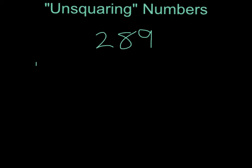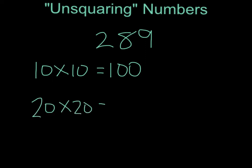Start out by multiplying 10 times 10. This equals 100. That is too small, so you know that your square number is going to be bigger than 10. Next, I am going to go up 10 more and multiply 20 times 20. 20 times 20 equals 400. This is too big, so I know that my square root is going to be smaller than 20.